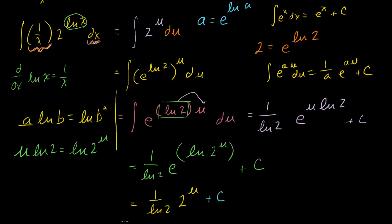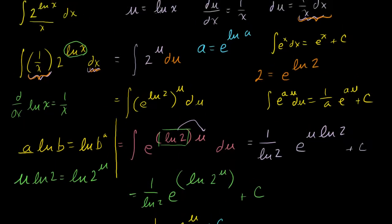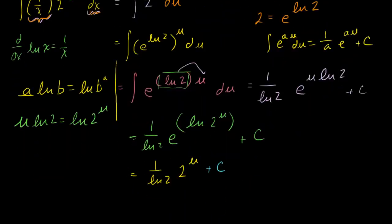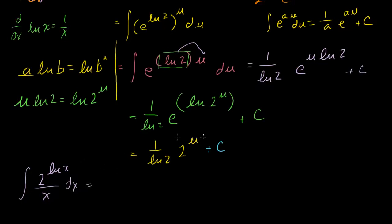And now we can reverse substitute. We defined u as equal to the natural log of x, so let's reverse substitute. The answer to our original problem — the integral of 2 to the natural log of x over x dx — is equal to 1 over the natural log of 2 times 2 to the natural log of x, plus c. And we're done. That was a pretty neat problem, so thanks to Bud for posting that.